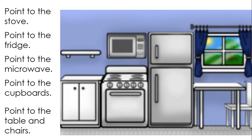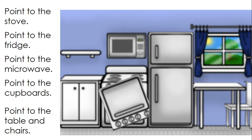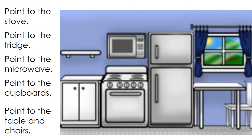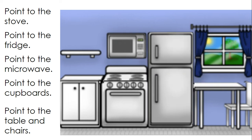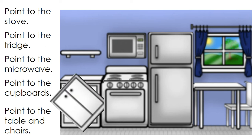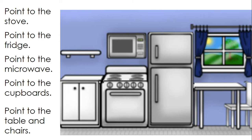Super. Now let's take a look at this kitchen. We're going to do some pointing. The first thing I want you to find is the stove. Point to the stove. Great! Point to the fridge. There it is. Now, point to the microwave. You did it. Can you find the cupboards? Point to the cupboards. Yes, there they are. And last, point to the table and chairs. There they are, way over to the side there.